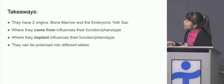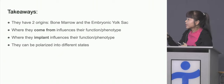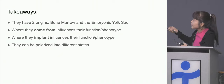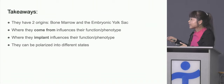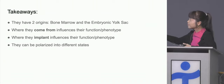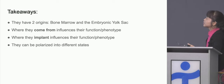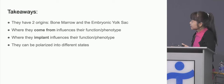They have two origins — bone marrow and embryonic yolk sac. Where they come from — whether from the embryo or the bone marrow — influences their function and phenotype. Where they implant — whether in the liver or the kidney — the signals from other cells in those tissues also influence their function and phenotype. And they can be polarized into different states.